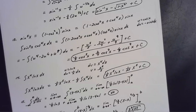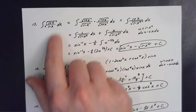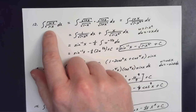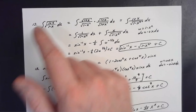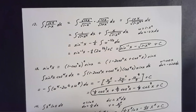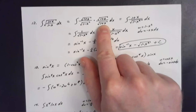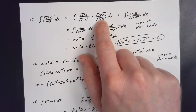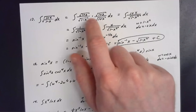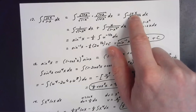For number twelve, the integral of the square root of (1 + x) over (1 − x) dx. I didn't like how the square root was set up, so I simplify by multiplying by an understood one — specifically, multiplying numerator and denominator by the square root of (1 + x). This gives (1 + x) without a square root in the numerator, which is helpful.